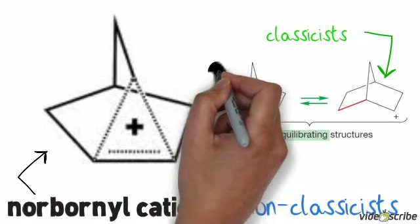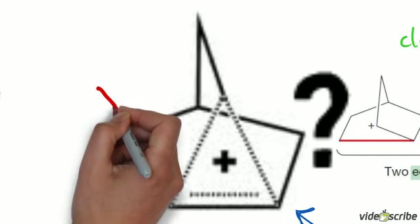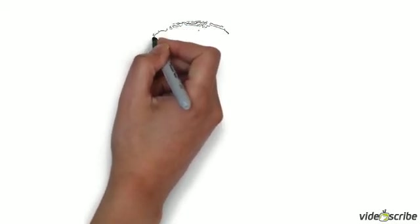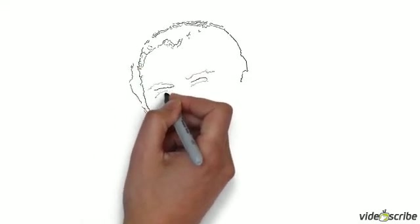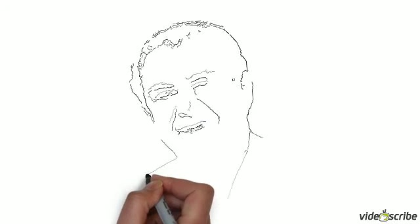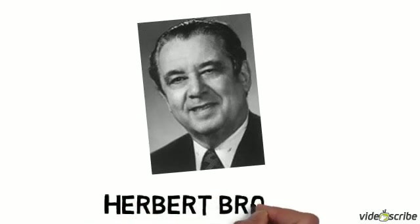Recent studies using NMR spectroscopy ended the discussion by proving the existence of the three-membered two-electron delocalized ion. Even though I lost my stance on the classical cation, I, until now, am still considered as one of the premier scientists who contributed so much to the field of organic chemistry.